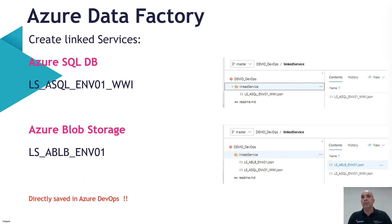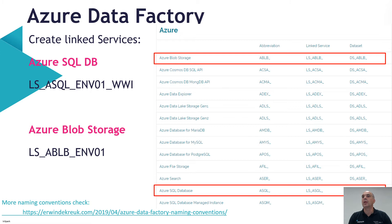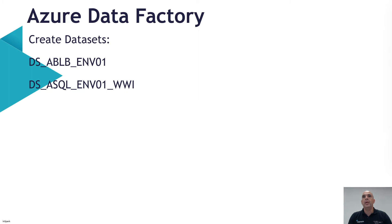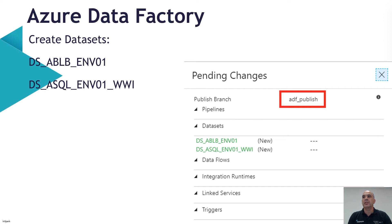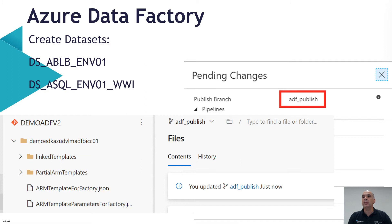The next step is to create some linked services — one for the Azure SQL database and one for the blob storage. Once you've created these, they will be directly saved in the Azure DevOps environment. I'm also using naming conventions here: 'LS' for linked servers, 'ASQL' for Azure SQL database, the environment number for the logical server, and the database name. Once we've created the linked services, we need to create some datasets defining the source data and destination, then publish them to our DevOps environment.